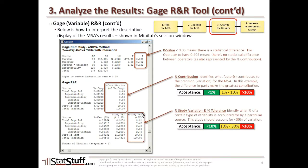Another thing to look at as part of the session window output is the percent study variation and also the percent tolerance. This identifies what percent of a certain type of variability is accounted for by a particular source. Anything less than 10% we consider to be acceptable. From 10 to 30%, we have to assess whether it's really acceptable or not.